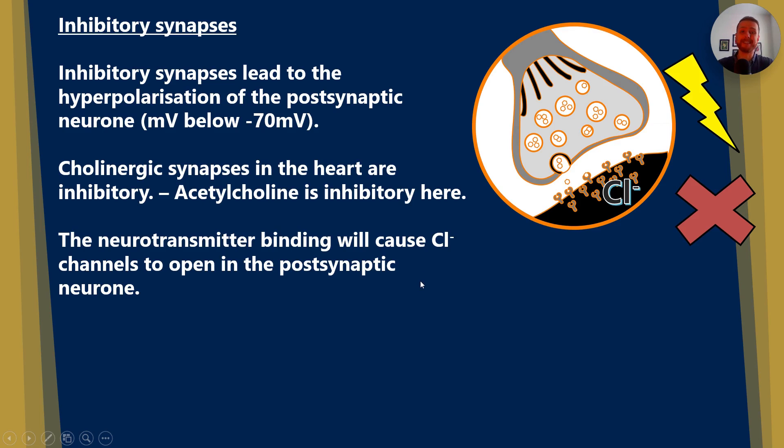The neurotransmitter binding, in this case, will cause chloride ion channels to open in the post-synaptic neuron. And I've represented that with the Cl- here. So if we've got more negative ions in the post-synaptic neuron, we're going to get further away from that threshold value of minus 55 millivolts. But that's not all. There's more to this.